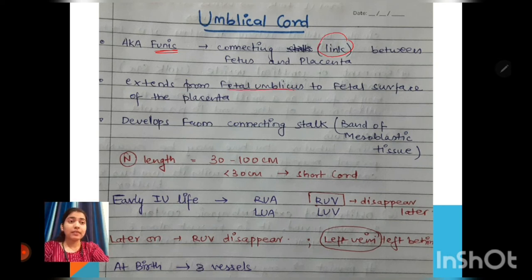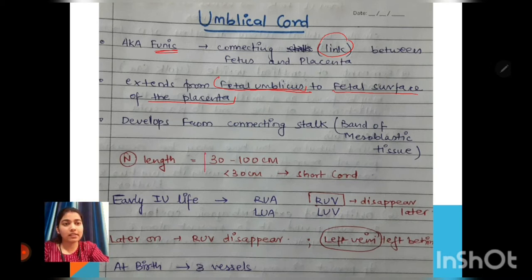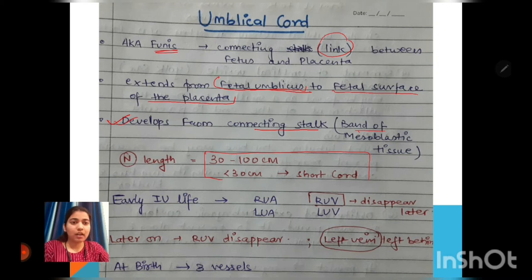The umbilical cord generally extends from the fetal umbilicus to the fetal surface of the placenta. Its normal length is 32–100 centimeters. If it is less than 30 centimeters, it suggests a short cord. It develops from the connecting stalk, which is a band of mesodermal tissue in early intrauterine life.